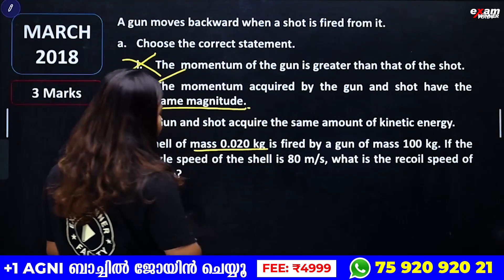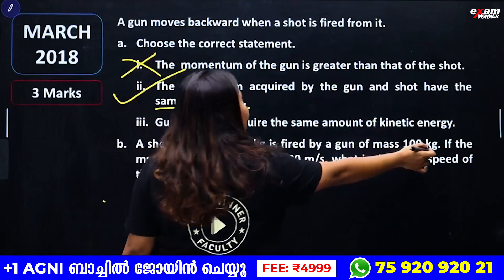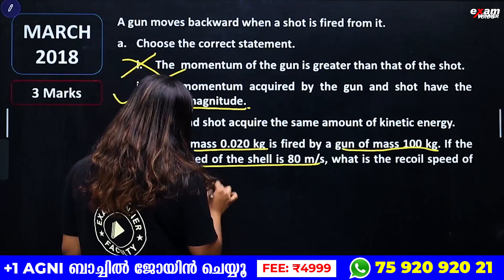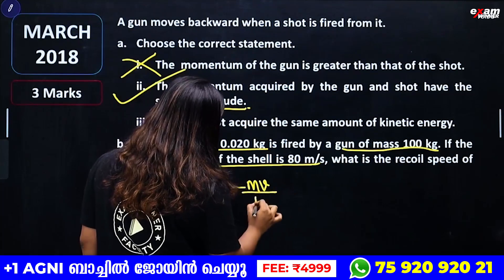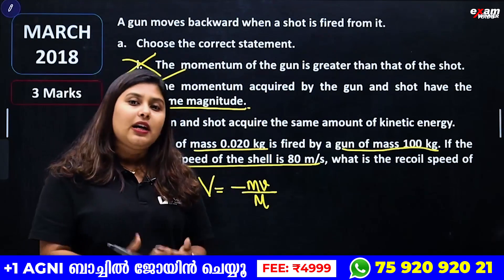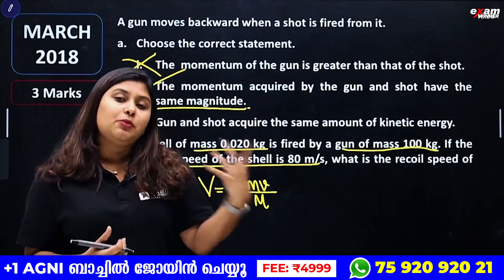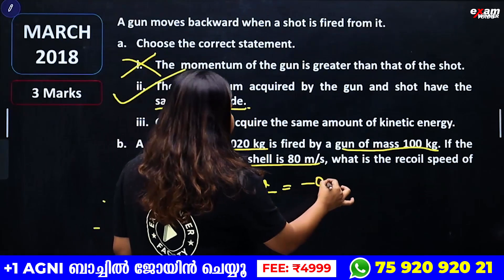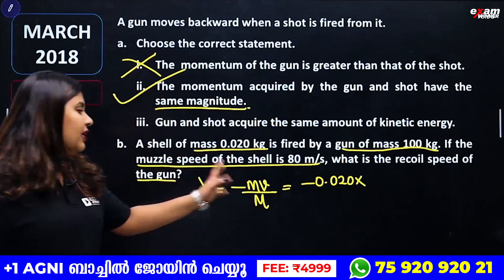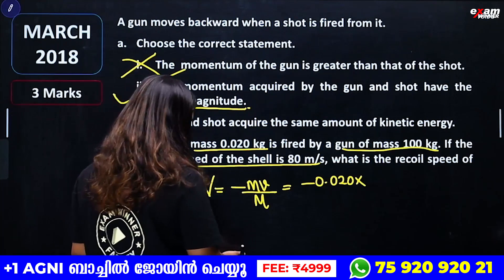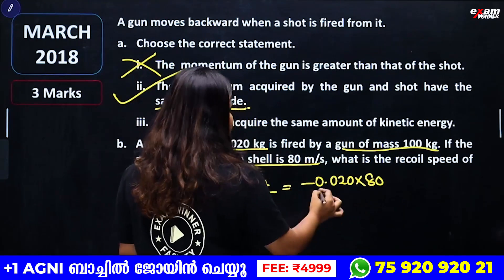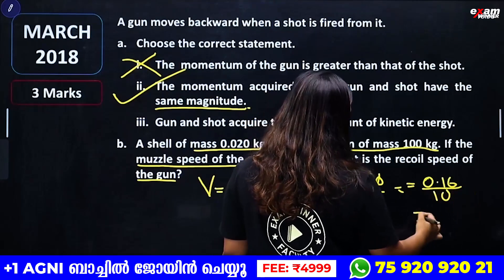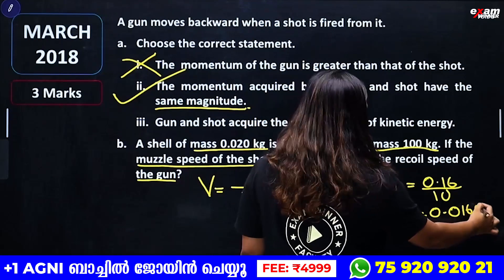Problem: A shell of mass 0.02 kg is fired from a gun of mass 100 kg. The muzzle speed of the shell is 80 m/s. Find the recoil speed of the gun. Recoil speed V = −mv/M = −(0.02 × 80)/100 = −0.16/100 = 0.016 m/s.